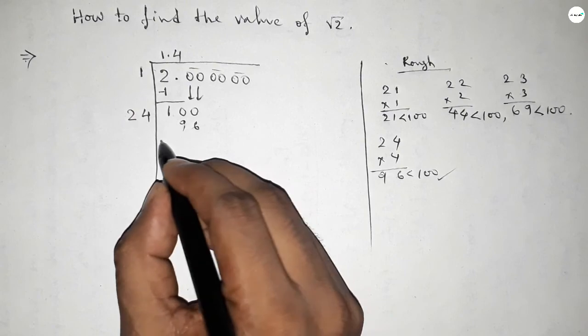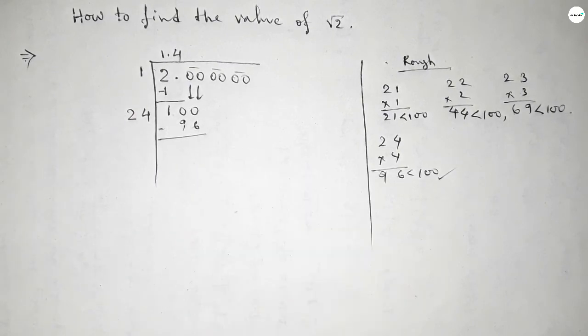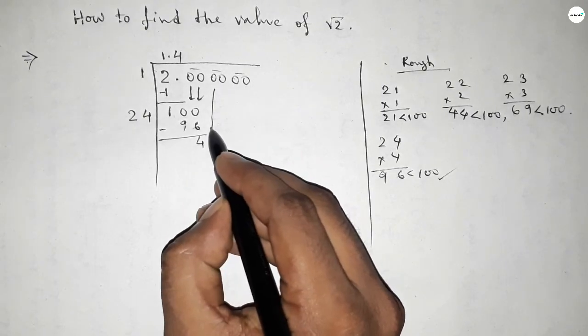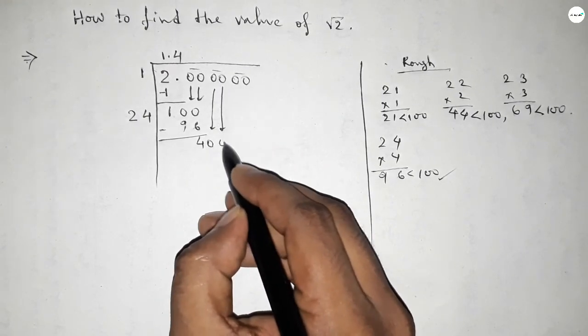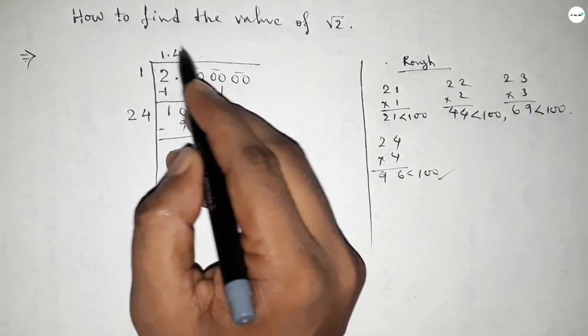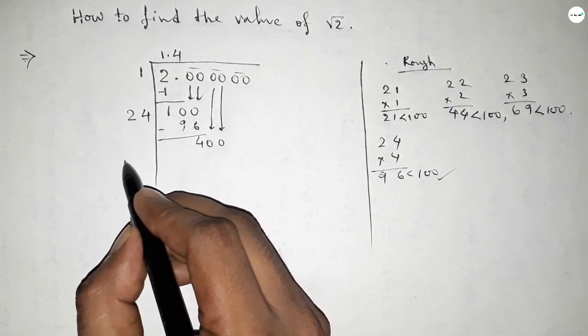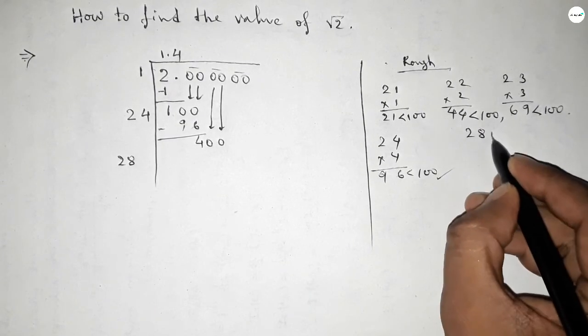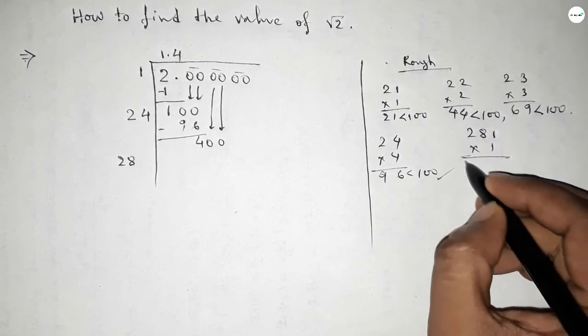If you put 5, then this is greater than 100. So we put here 4, so this is 96. Now subtracting, so this is 4. Now putting this pair of zeros here. Next, taking the double of 14, so this is 28.